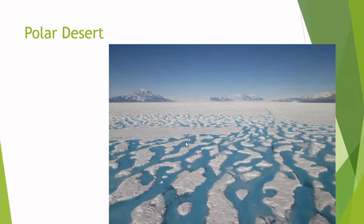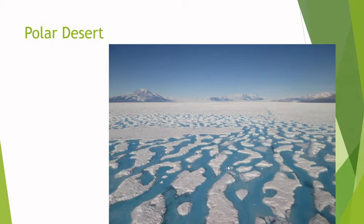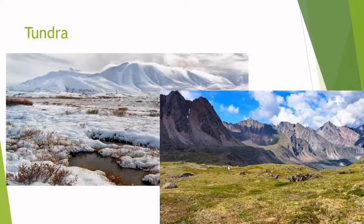In the polar zone, which is usually the north and south poles, the closest to the poles we find the polar desert. It's a desert because it rains very little, and when it does it's snow. The average annual temperature is always below zero degrees, so it's permanently frozen. There are usually no producers, no plants, and very few carnivores.